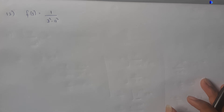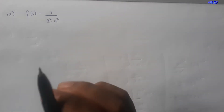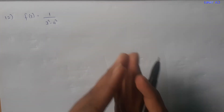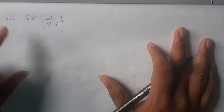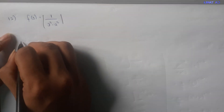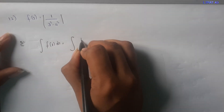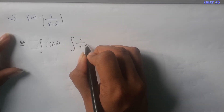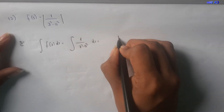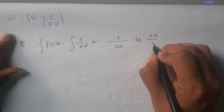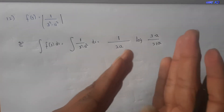Formula 4: using the method of partial fractions, the integral of f(x) where f(x) equals 1 divided by x² minus a². The solution: integral of f(x) dx equals the integral of 1 by (x² minus a²), which gives 1 divided by 2a times log of (x minus a) divided by (x plus a), plus k.